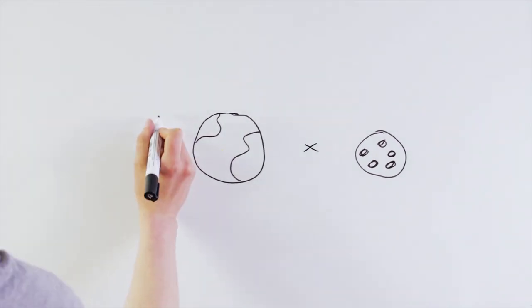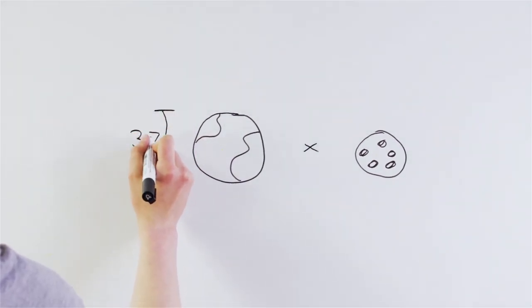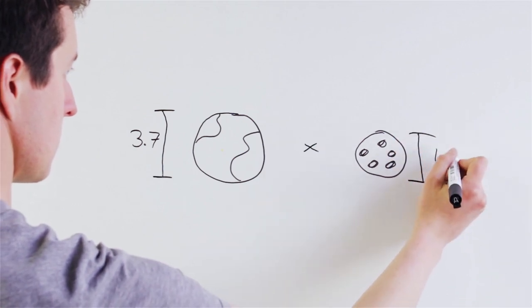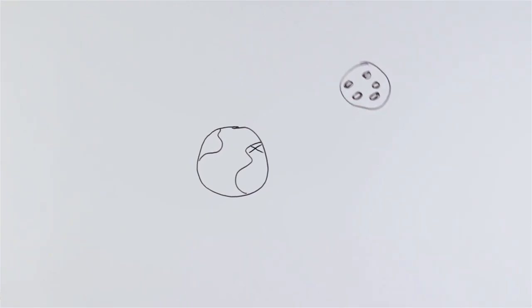Because Earth is nearly four times the size of the Moon, the center of mass between them isn't in the middle, but actually lies just below the Earth's surface. Because of this, our orbit at this point is much less obvious than that of the Moon's.